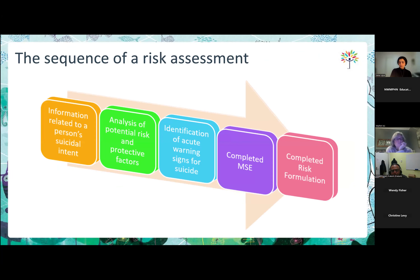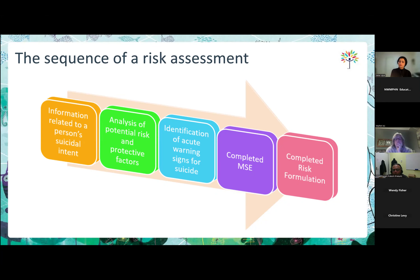In terms of the sequence of a risk assessment: first, information related to the person's suicidal intent is obtained. Then analysis of potential risk and protective factors gathered through the history and mental state. Then identifying acute warning signs of suicide, completing a mental state examination, and completing a risk formulation. Some warning signs for suicide could be a person having written a suicide note, giving away possessions, saying goodbye, or sending goodbye text messages.